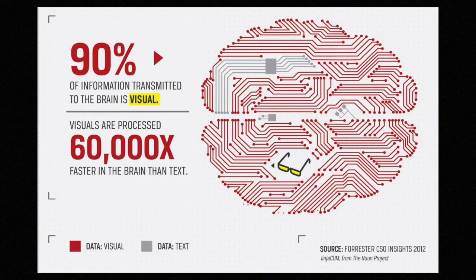Let me take a step back for a moment. I want to talk about this piece of research — that 90% of information transmitted to the brain is visual and that visuals are processed 60,000 times faster in the brain than text. And so it amazes me that we don't leverage the opportunities to engage our students visually as much as we do through reading and writing text. And that's one of the pieces of this project that I'm most proud about.